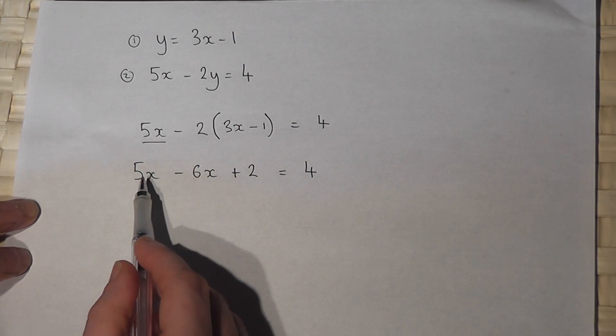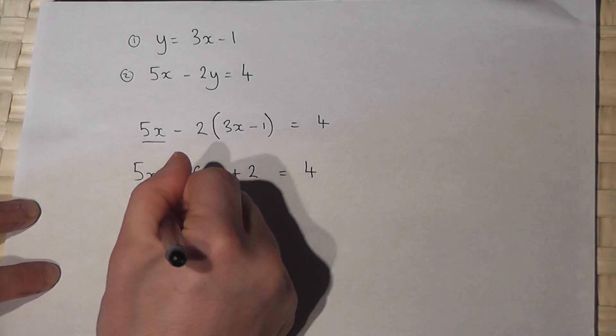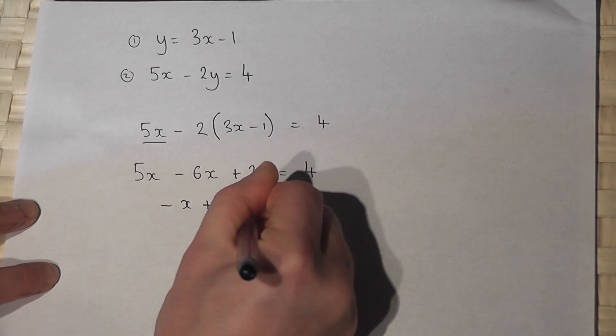Right, I'll now simplify. 5x take away 6x is minus x, plus 2 is 4.